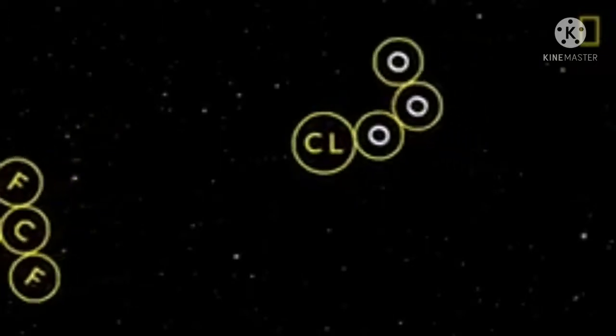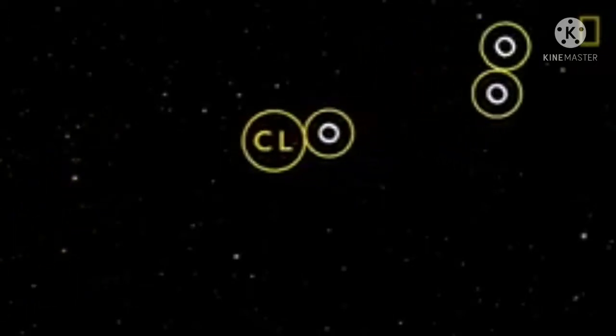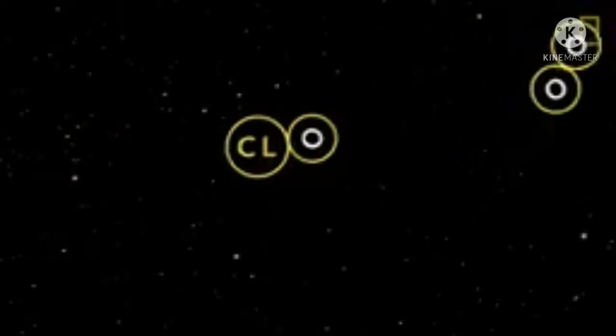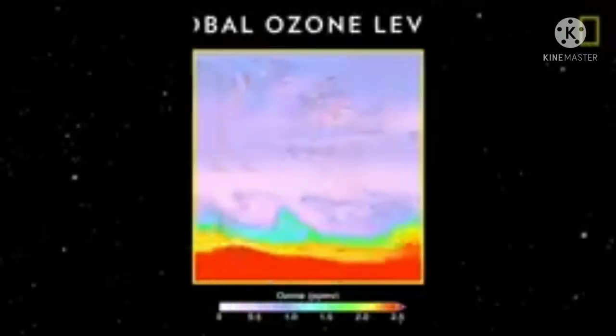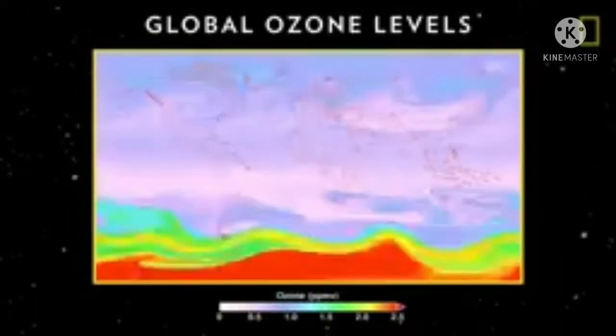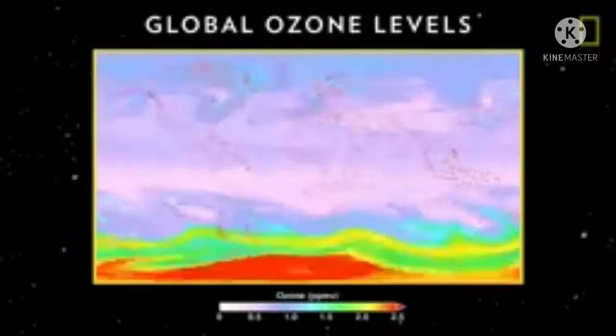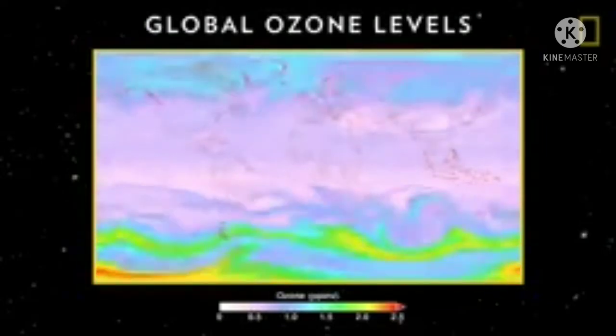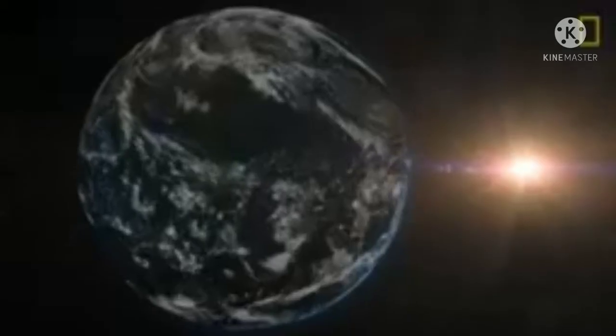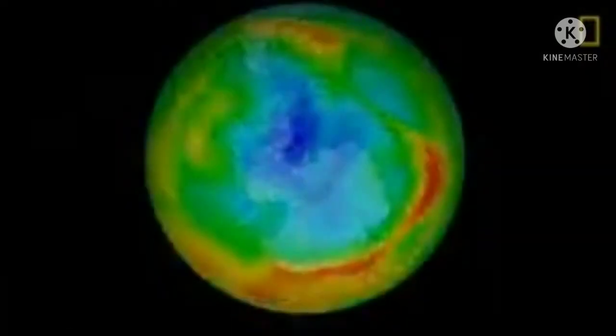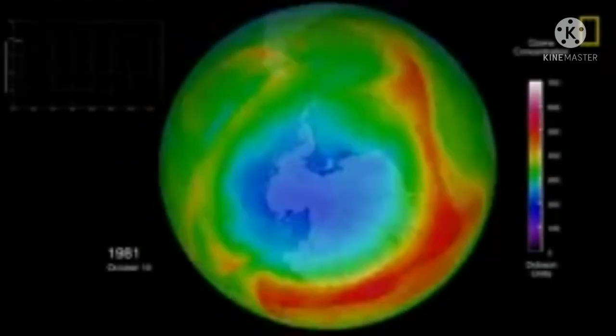The fluorine in CFCs reacts with ozone and breaks apart ozone molecules. The area of damage in the ozone layer is called the ozone hole. This creates a patch where the ozone layer is much thinner than before.